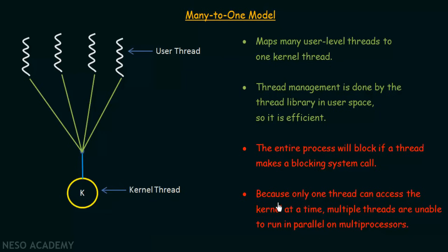The second limitation is that because only one thread can access the kernel at a time, multiple threads are unable to run in parallel on a multiprocessor. Since all user-level threads are mapped to just one kernel thread, even if we have a multiprocessor system we cannot make use of it — one kernel thread will run on only one processor. So that is another limitation of the many-to-one model.